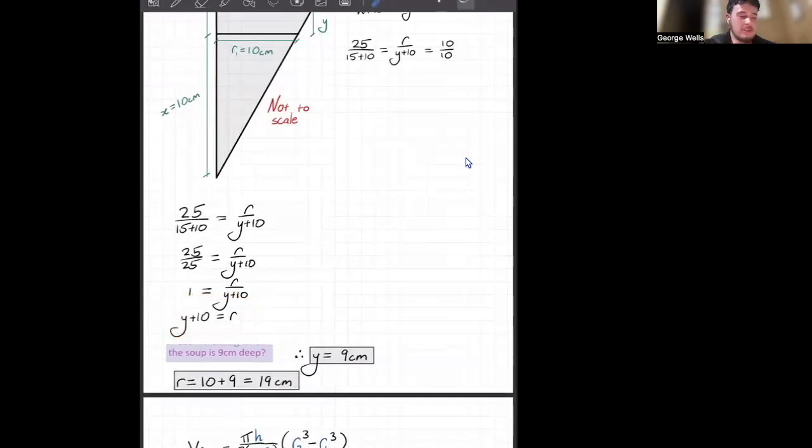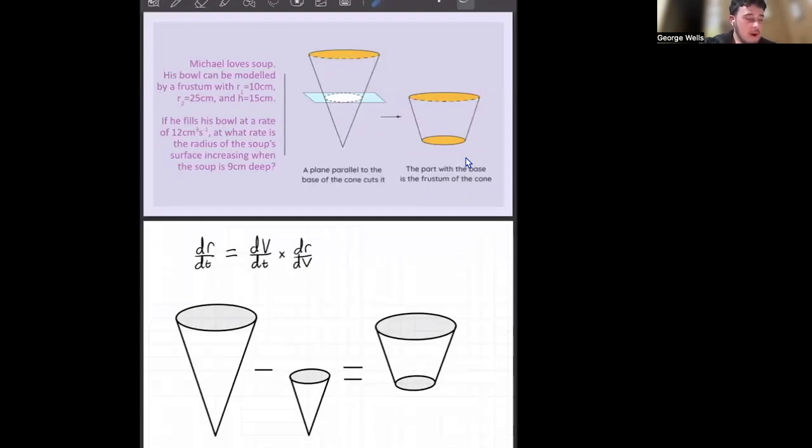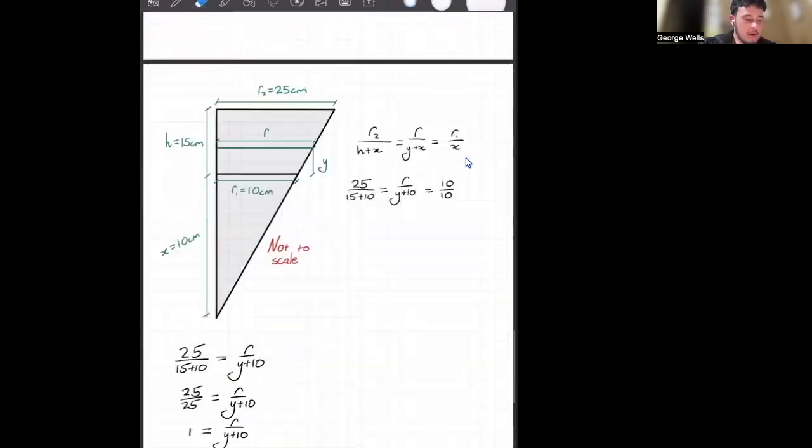We want the rate of the radius of the soup surface increasing when the soup is 9 centimeters deep. So depth of soup is equal to 9 centimeters. If we go back down to where we were,